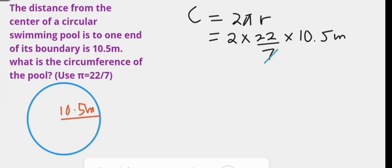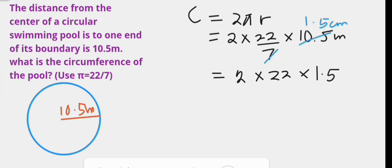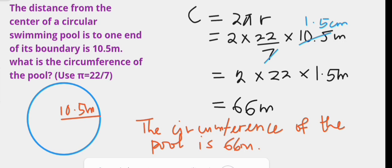7 divides into 10.5 going 1.5 times, hence the circumference of the pool is 2 times 22 times 1.5 meters, which is 66 meters. Hence the circumference of the pool is 66 meters.